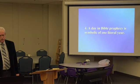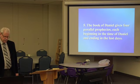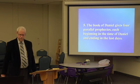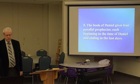And the last one: The book of Daniel gives four parallel prophecies, each beginning in the time of Daniel and ending in the last days. So there are four prophecies in Daniel that parallel one another, starting in Daniel's time through to the end days — is that correct? Ending in the last days.